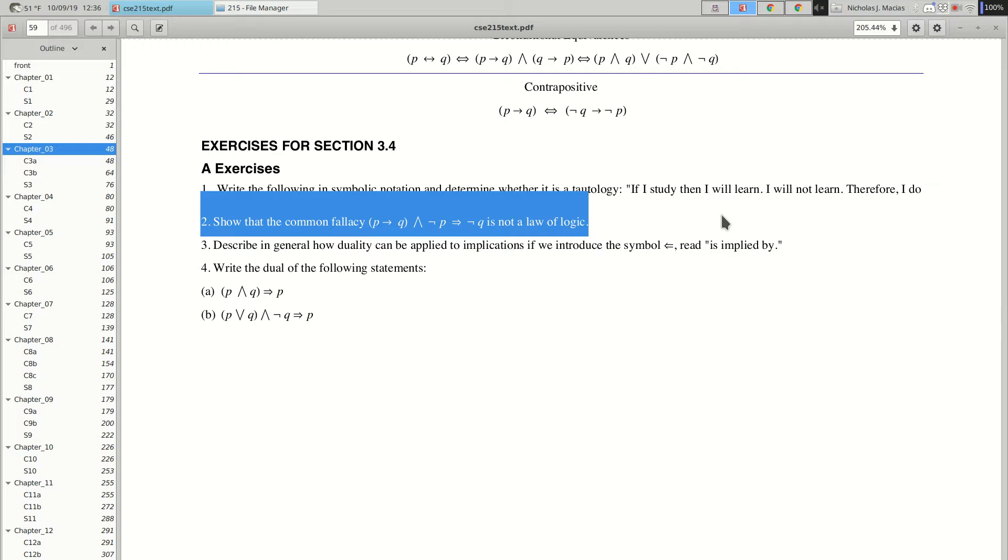And it doesn't necessarily prove Q, so we don't get a contradiction. But yeah, you could pick particular propositions, P and Q, and show that this fails to be valid. Disproving is usually easier because all you have to do is find one bad example and you're done.